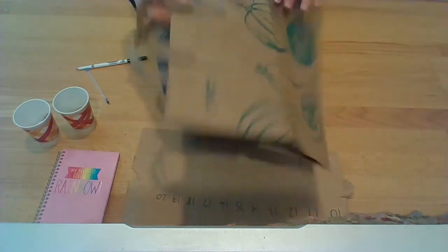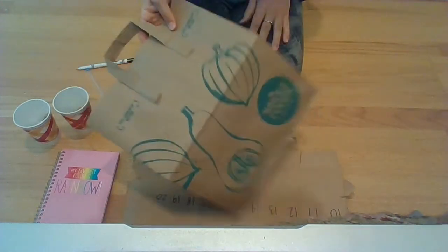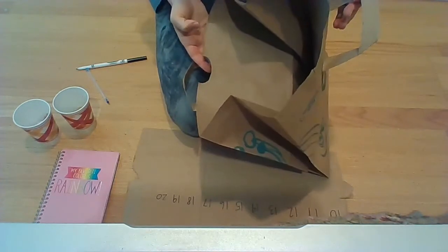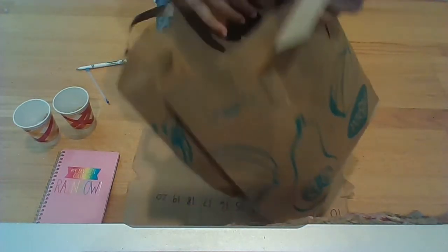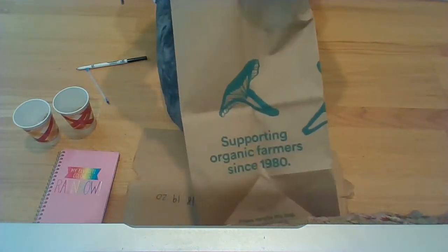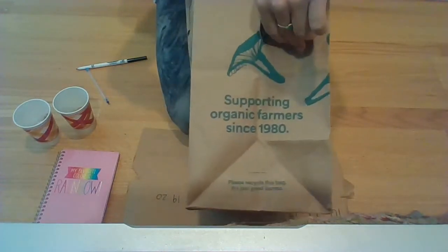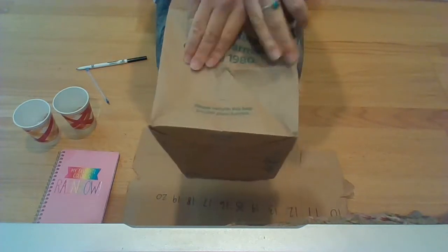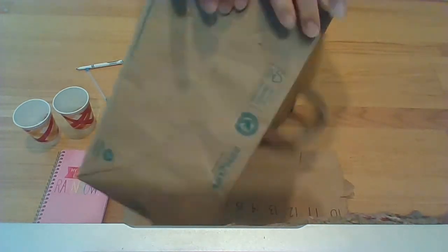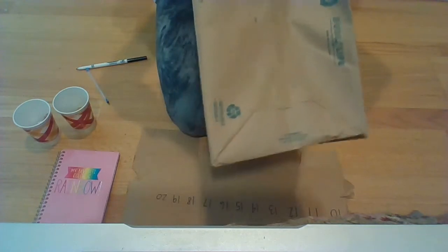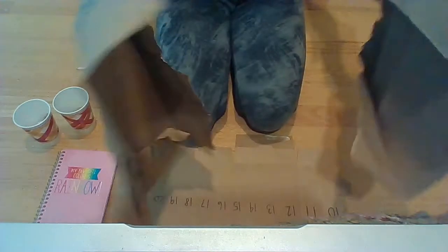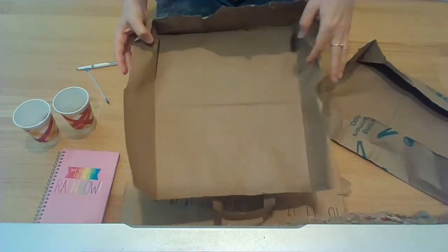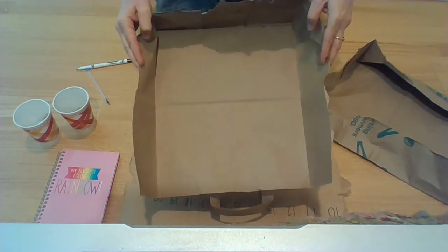I'm gonna use this paper bag and you'll notice it has some colors on it so I want to use the inside that's blank. So I'm just gonna open it up and I'm gonna rip down the sides here all the way around to the other side until you have half of your bag and then you can see the blank side on the inside is much easier to draw on.